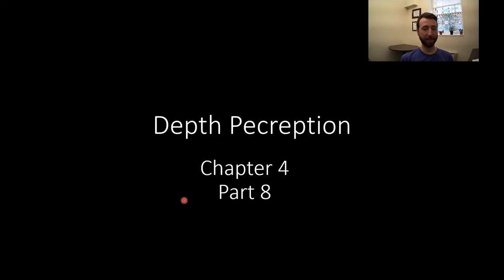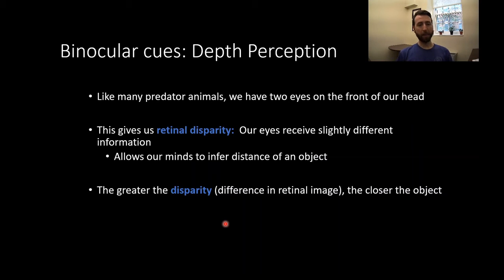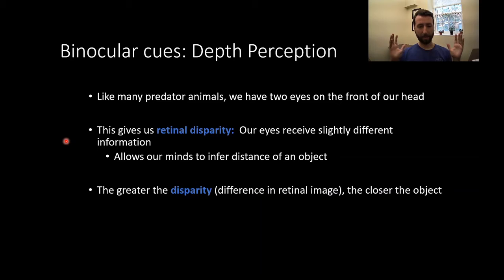Welcome to our continuing discussion of sensation and perception. This time we're talking about depth perception. Like many predatory animals, we have two eyes on the front of our head. This gives us a couple of advantages — we might not have as wide a visual field as prey animals with eyes on the sides of their heads, but it gives us retinal disparity. Our eyes receive slightly different information because they're in slightly different places, giving us slightly different stimulation from the same object. This allows our minds to infer the distance of an object, in the same way our ears can do this with the difference in how sound waves land on one ear versus another.